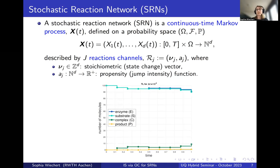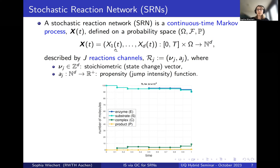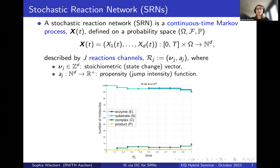A stochastic reaction network is a continuous-time but discrete-state Markov process. We model the number of molecules per species over time using a D-dimensional vector, where D equals the number of different molecule types, and the i-th entry corresponds to the count of the i-th molecule. In the plot, the x-axis is time and we track the number of molecules for, in this example, four different species over time.